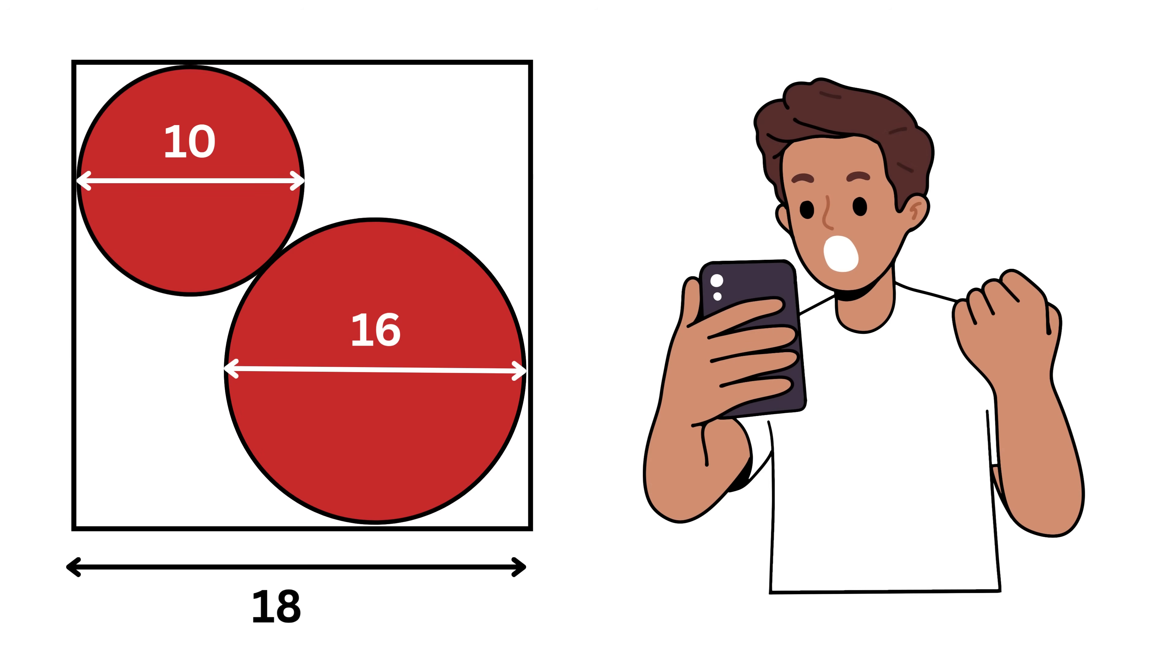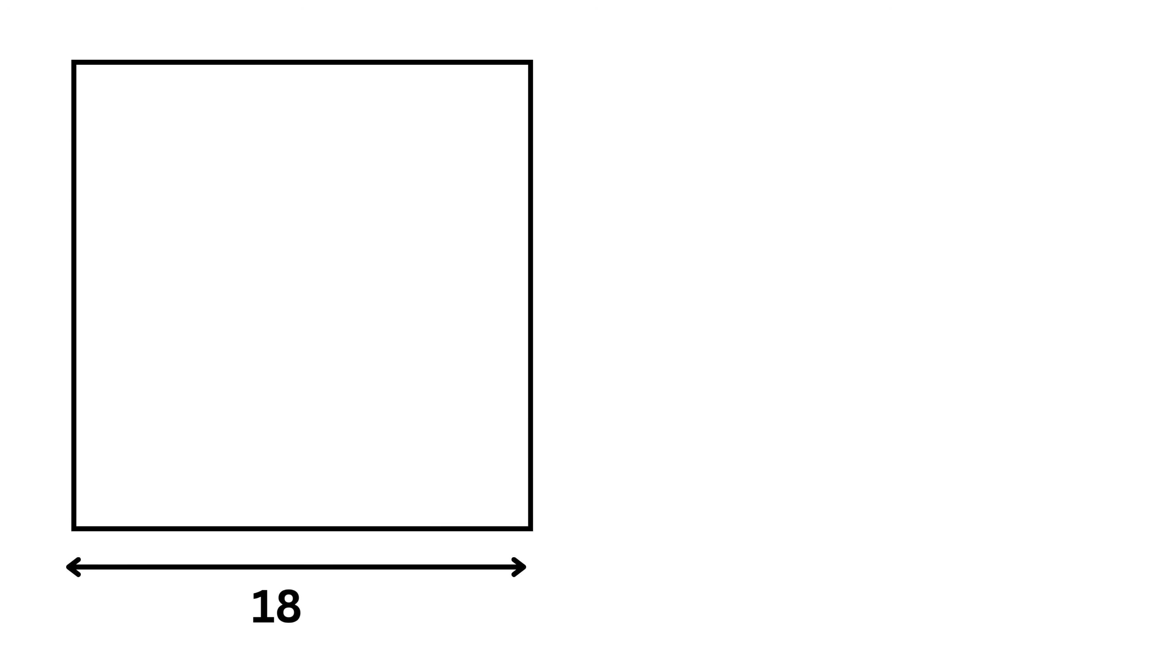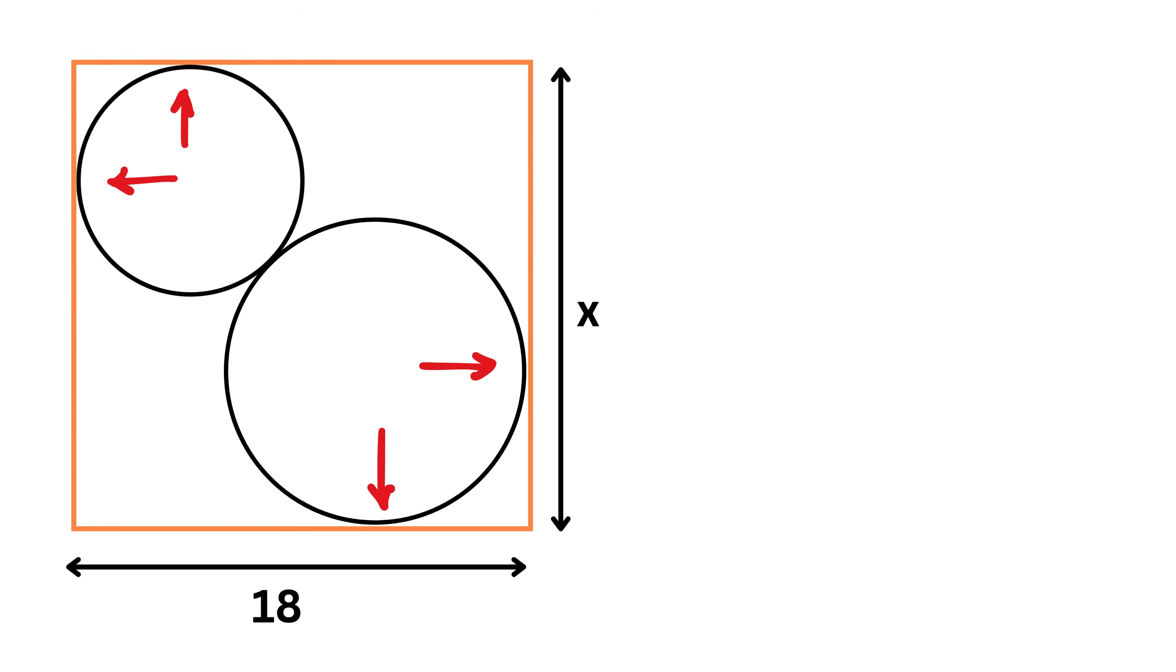This is an amazing looking question. We have a rectangle whose length is 18 units and width is x. Then we have two circles inside this rectangle such that both of them touch each other and are also touching this rectangle externally. Diameter of this circle is 10 and that of this circle is 16 units.